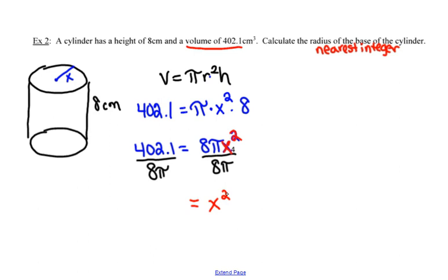So I've got x squared all by itself. On the left side, I've got 402.1 over 8 pi. And then in order to solve for x, in order to undo with squaring it, I'm going to square root it. So my x value here, or my radius, is going to be the square root of 402.1 over 8 pi.